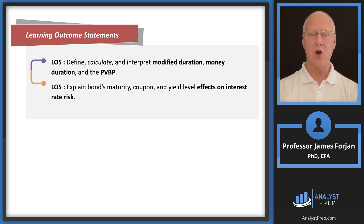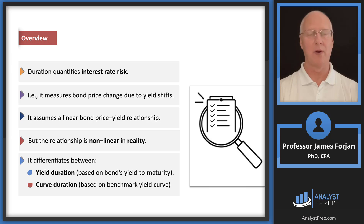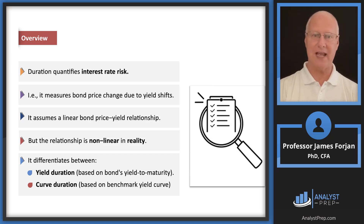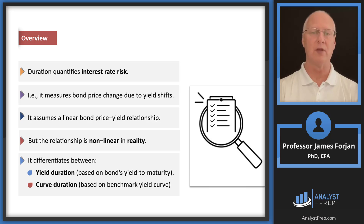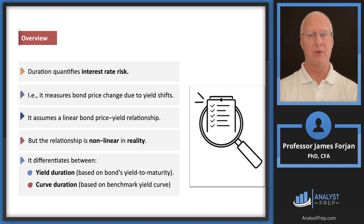What we know from bond pricing is that when yields go up, bond prices go down. We're investigating that relationship because we call that interest rate risk. Duration is a measure of interest rate risk — it is a first derivative of the price-yield relationship.